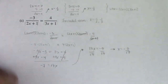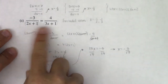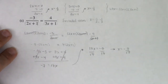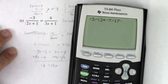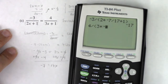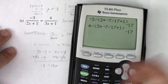To check this on the calculator, I'll plug negative 7 over 17 into both sides. Doing negative 3 divided by, in parentheses, 2 times negative 7 over 17 plus 1, for the left side — and 4 divided by 3 times negative 7 over 17 plus 1 for the right side. Both give negative 17, so both sides are equal. I was a little suspicious since I don't usually get an integer back, but I checked it and I was good to go.